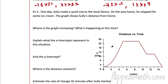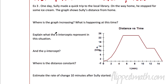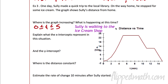Last one — Sully made a quick trip to the local library. On his way home, he stopped for some ice cream. Here's the graph. Where's the graph increasing? The graph is increasing from 0 — this is time in minutes and we're looking at the distance — the time has to be between 0 and 5, where it's increasing. What is happening at this time? He's walking to the ice cream shop.